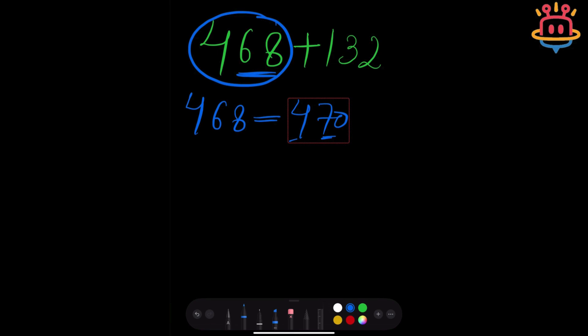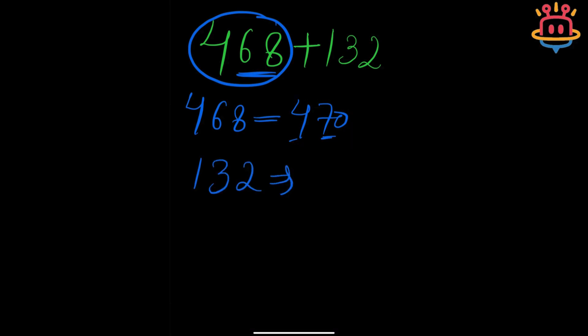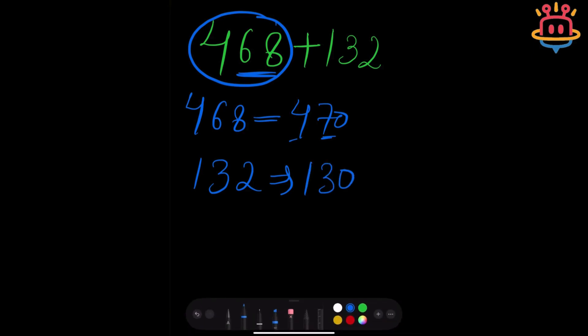Similarly, we are going to follow the same rule for 132. Can I round off 132 to the nearest 10 to get 130? Sounds simple and interesting! Since 30 is closer to 32, I can write 132 as 130, right? Now step number two is simple, we just...